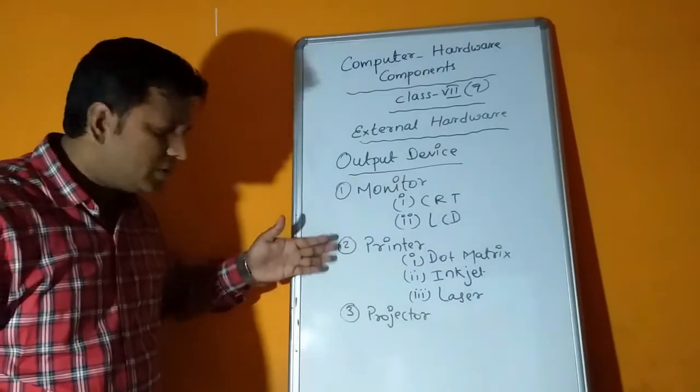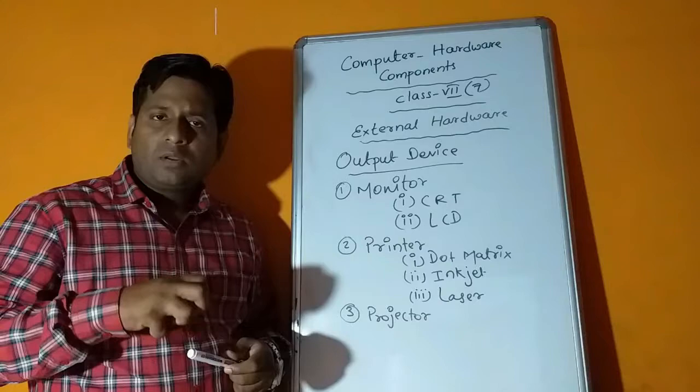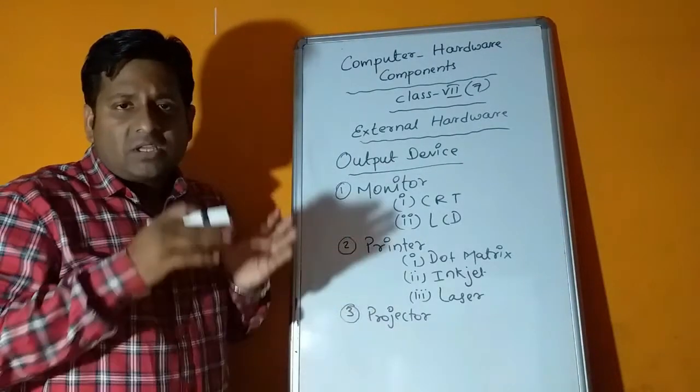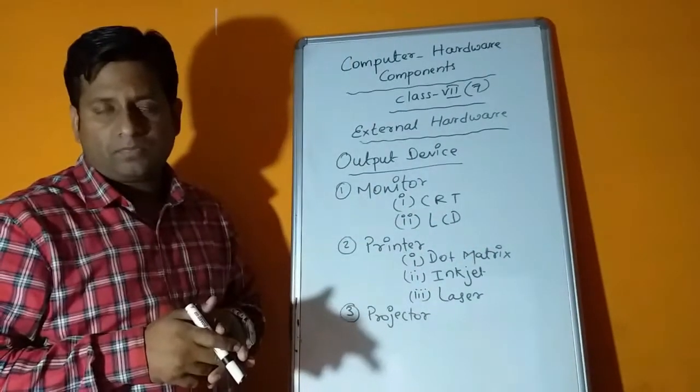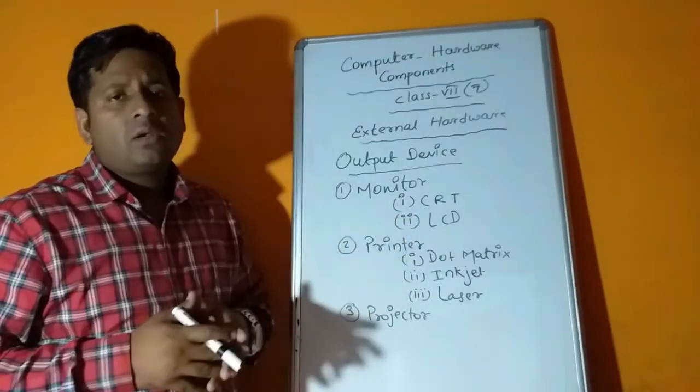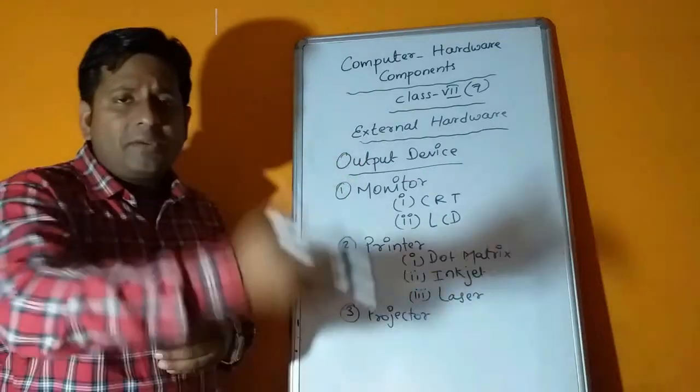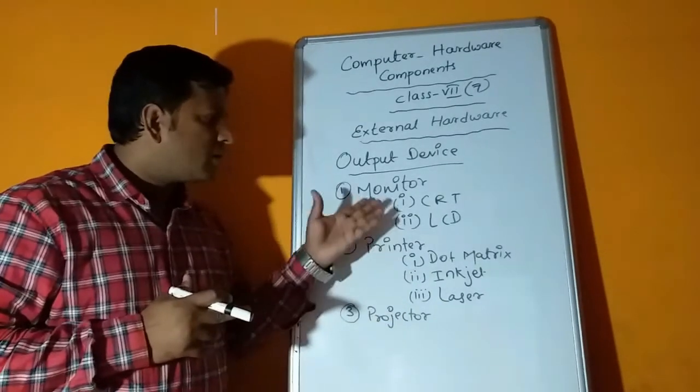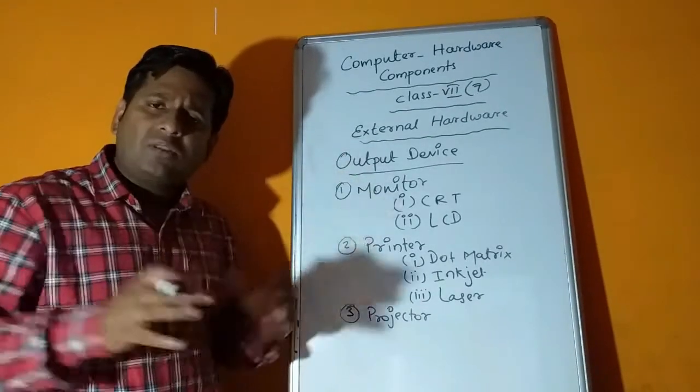Now let us move to output devices. For output device I have listed monitor, printer and projector. First let me tell you what is output device. The device through which the data, whatever we have inputted to computer after processing, gets displayed - the device which interacts with the user and displays the result. First part is monitor. Monitor is the most common output device. Monitor gives us whatever we send to the computer as soft copy.